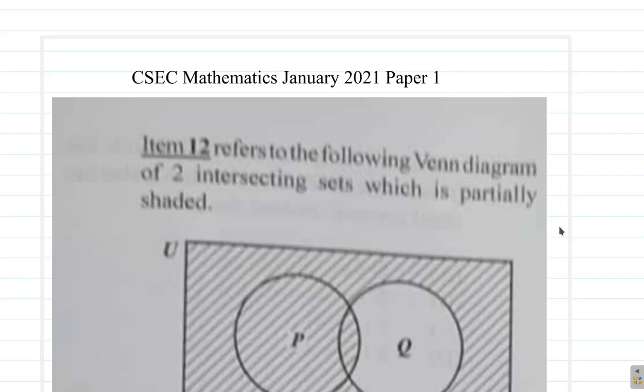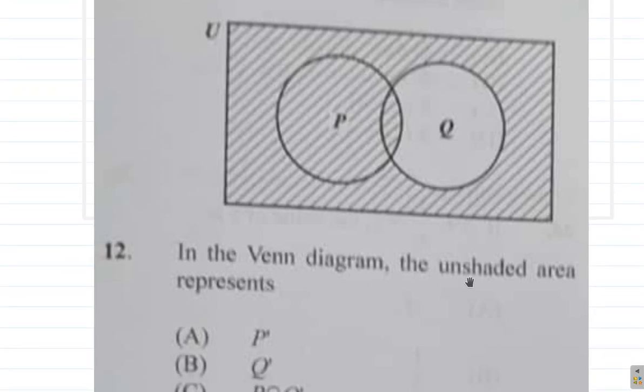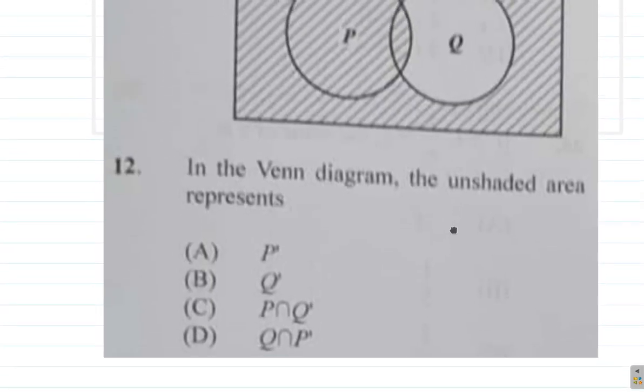Item 12 refers to the following Venn diagram of two intersecting sets which is partially shaded. Okay, so you see only P is shaded in the Venn diagram. The unshaded area represents—you tell me which one.